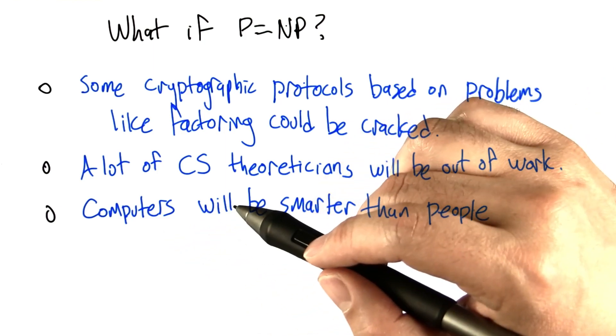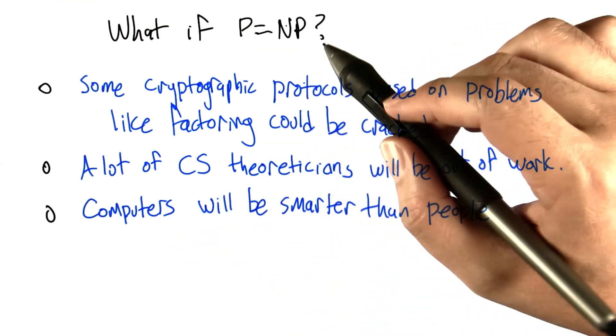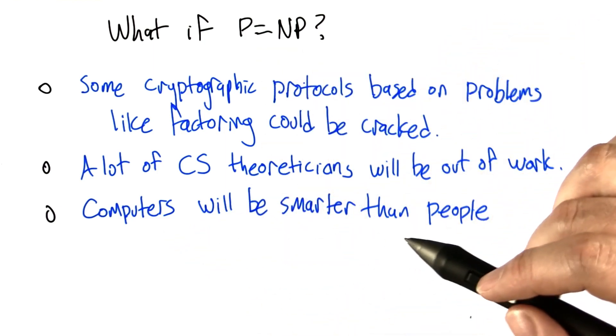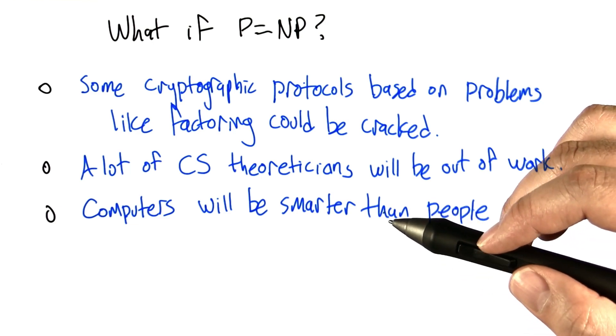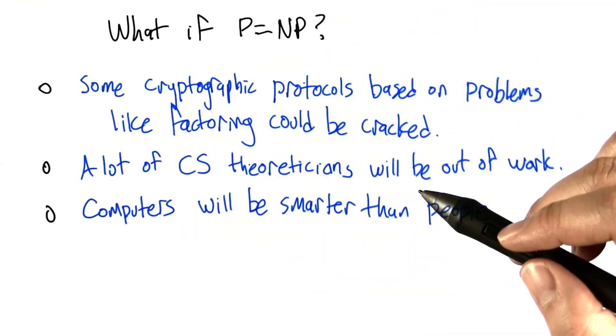Another possible outcome might be that with P equal to NP, that means that computers will be smarter than people. They'll be able to solve problems fast that people can't. Just tell me which one you think is true.